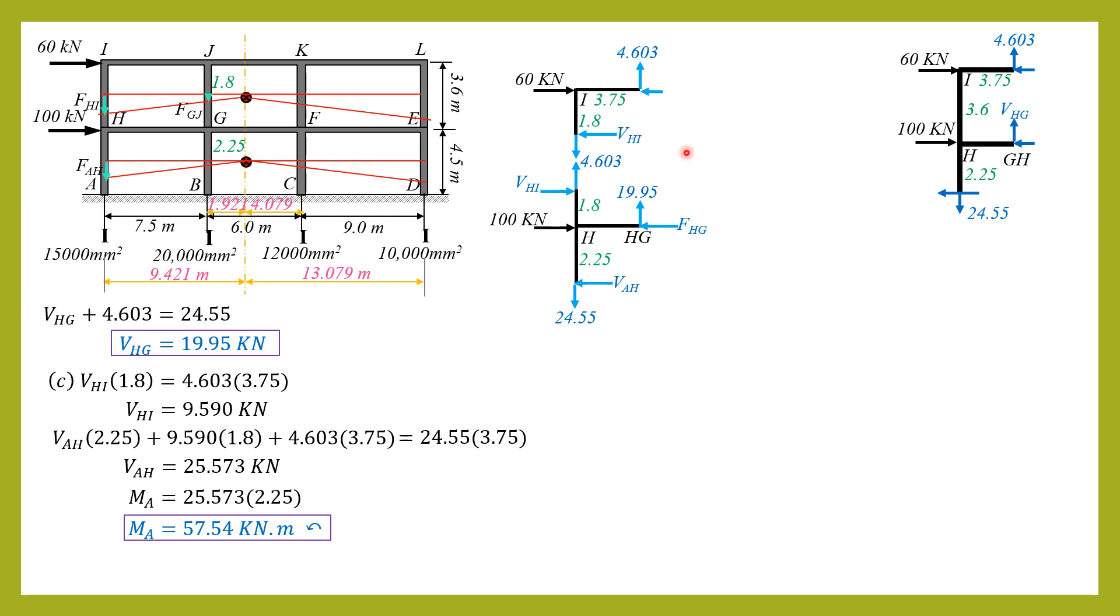Finally, moment at i is just 4.603 times 3.75 or 9.59 times 1.8, either way. So I'll use 4.603 times 3.75. So moment at i is equal to 17.26 kilonewton meter, as compared to 18 kilonewton meter in portal method. So that's it for this problem. Thank you.